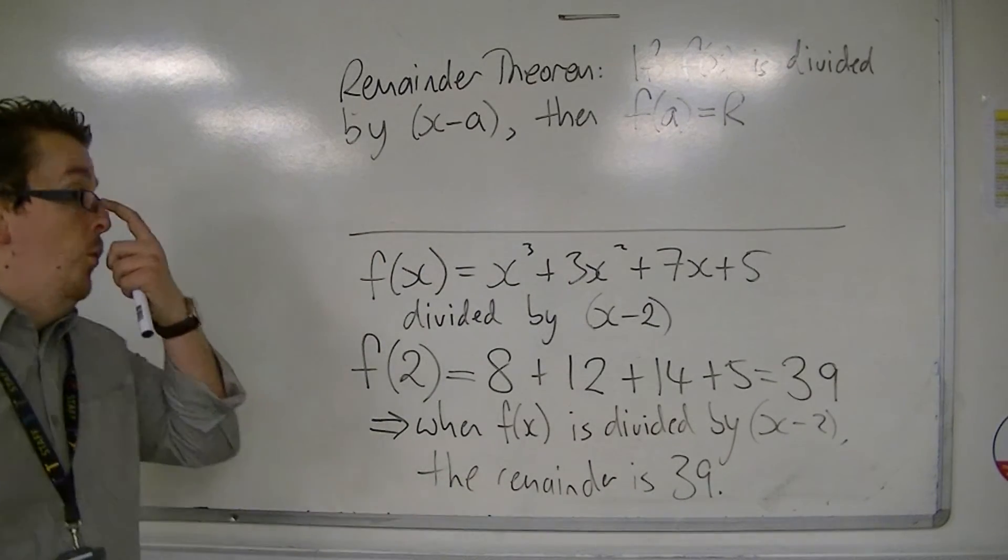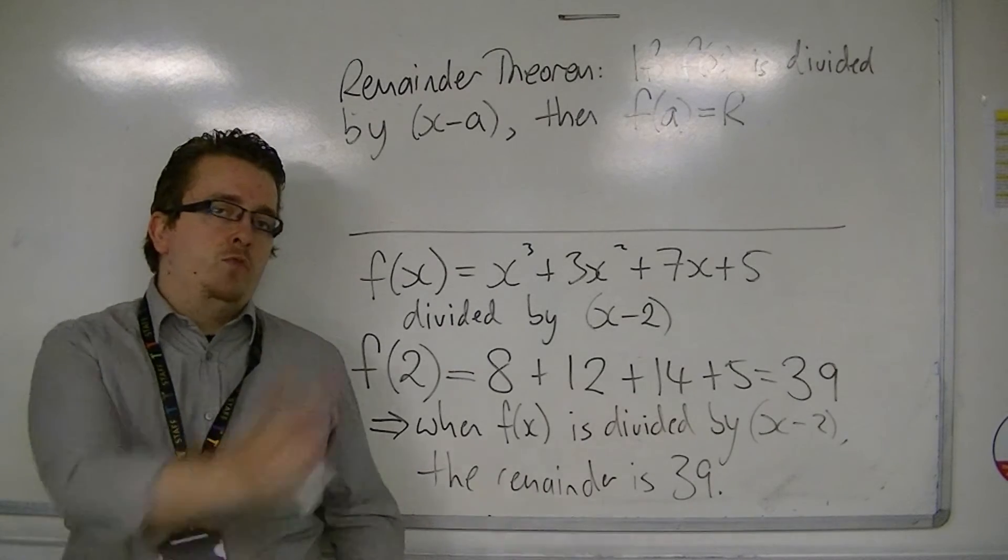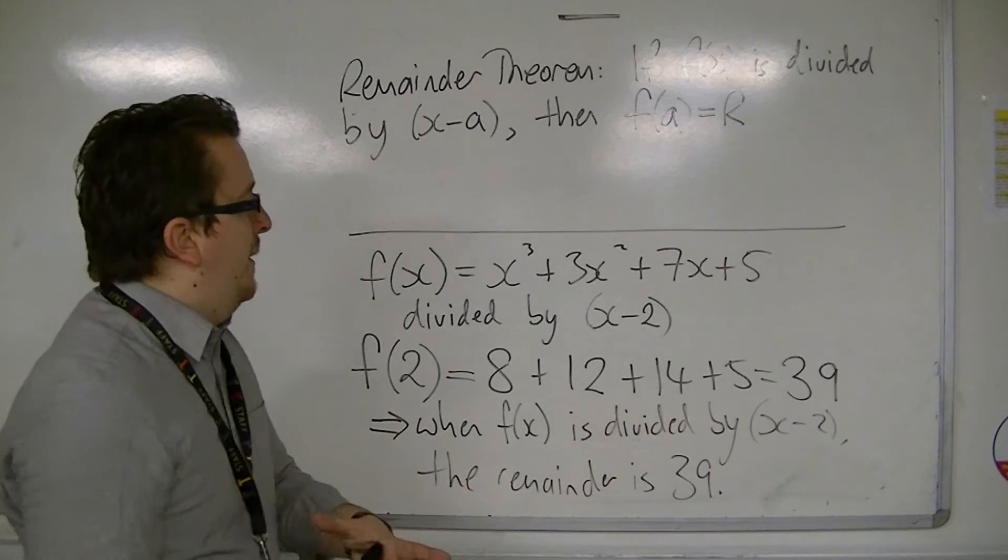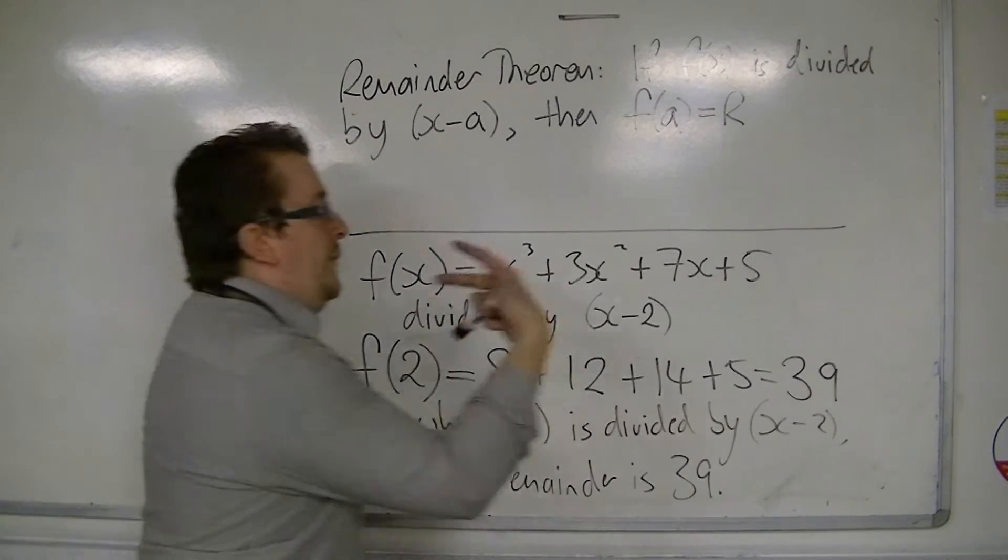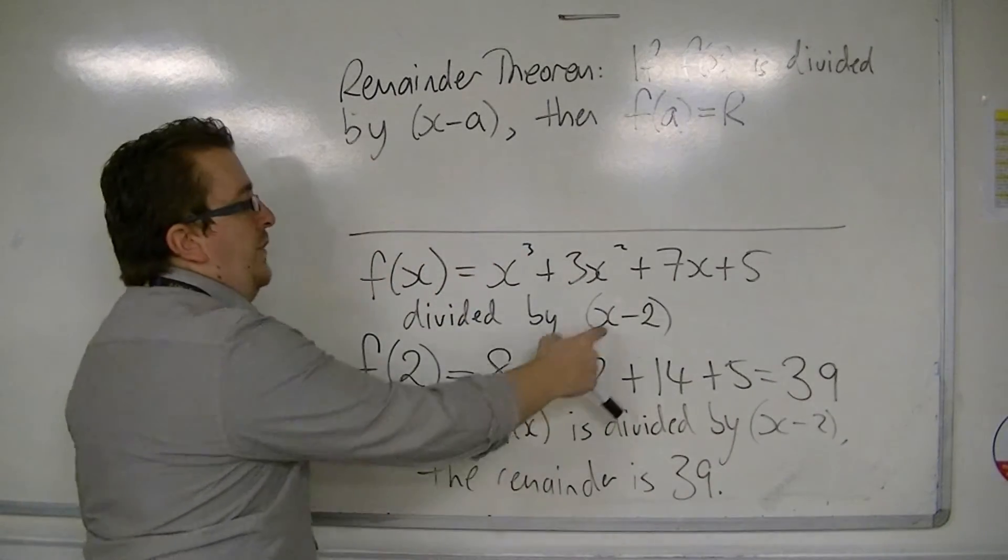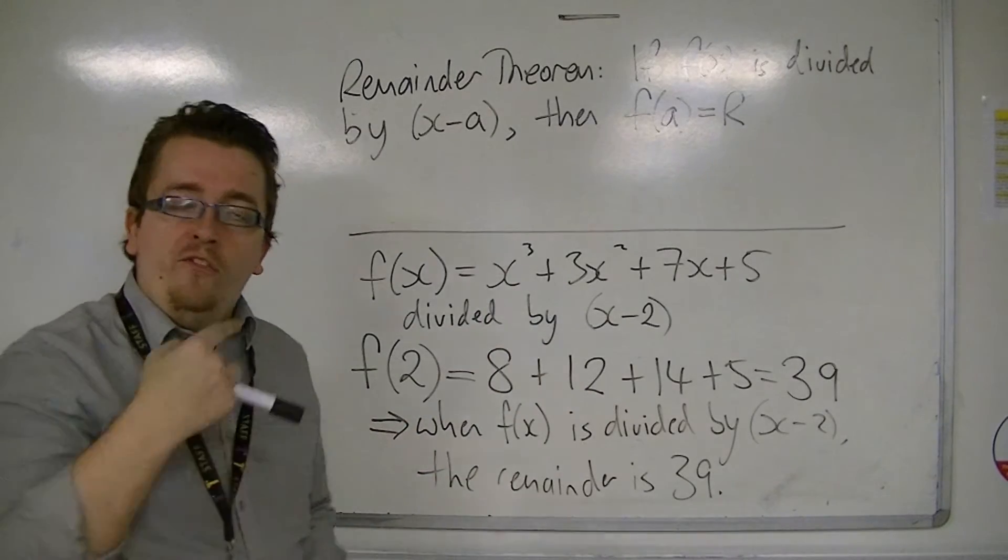And you might be thinking, well, what's really the difference between the factor theorem and the remainder theorem then? Because ultimately, we've done exactly the same thing, but with the factor theorem, you get 0, which therefore means that what you've divided by must be a factor.